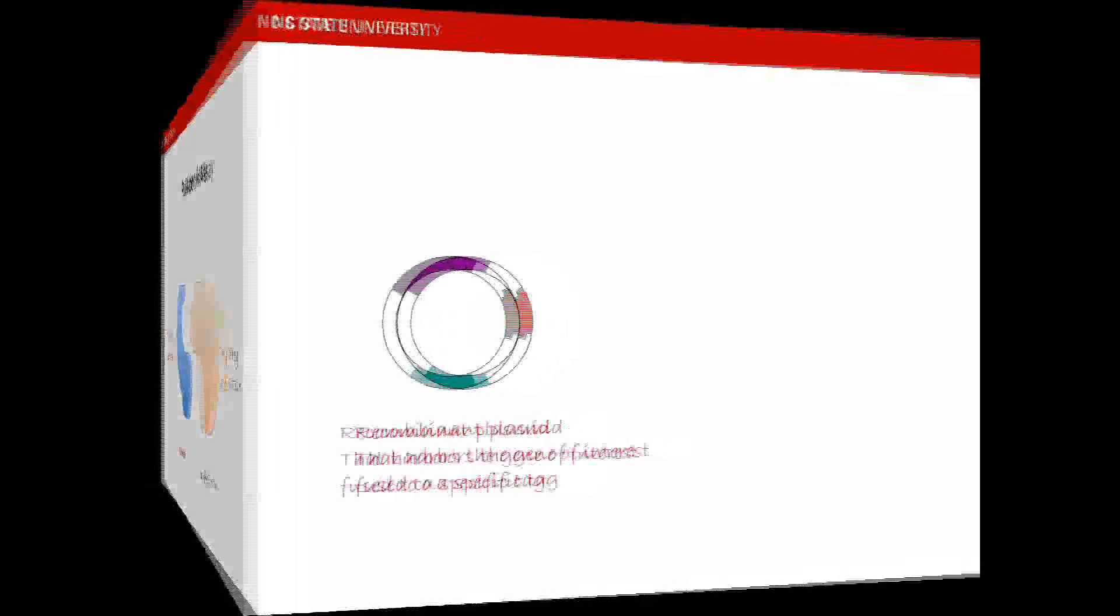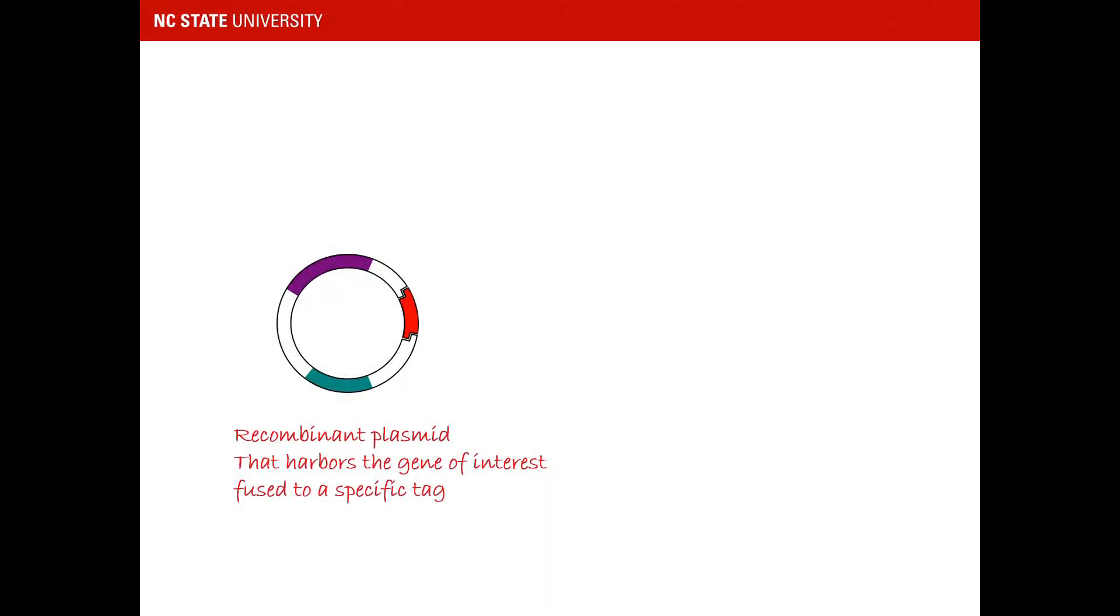First, the recombinant DNA plasmid that carries a gene of interest fused to a specific tag is used to obtain the tagged-bait protein.